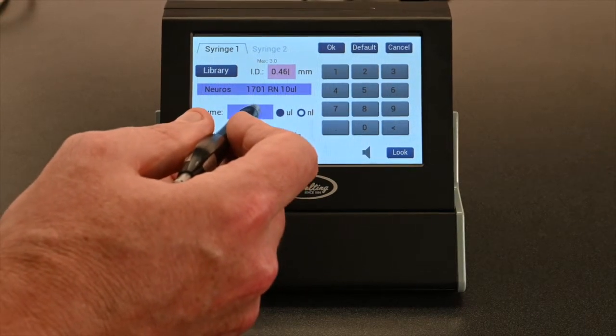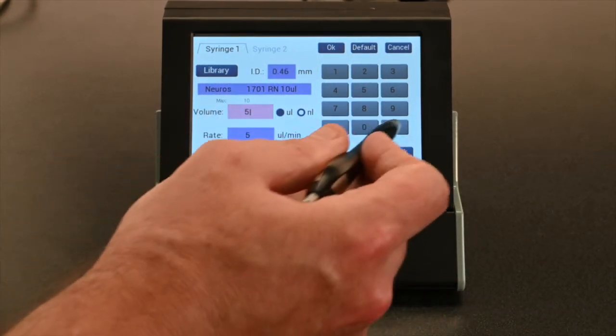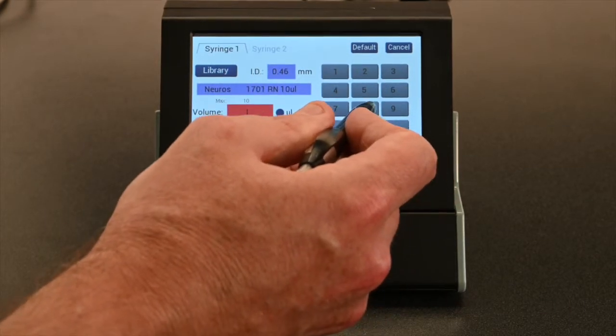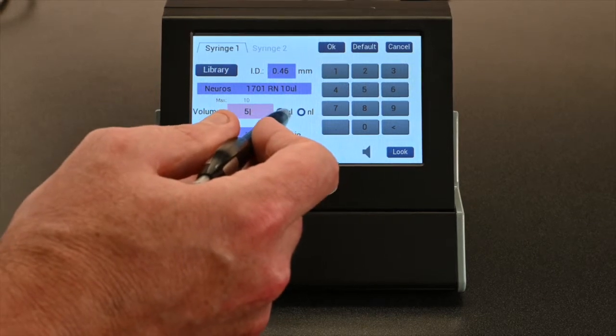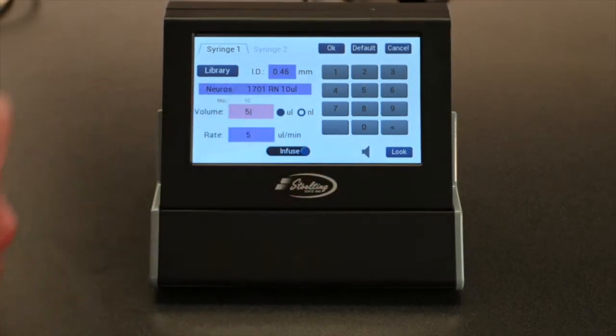Now you just need to select your volume. Same thing. Touch into the box, backspace, hit 5 or 2 or whatever number you want. Select microliters, UL or NL for nanoliters.